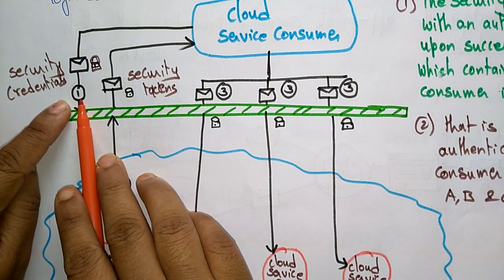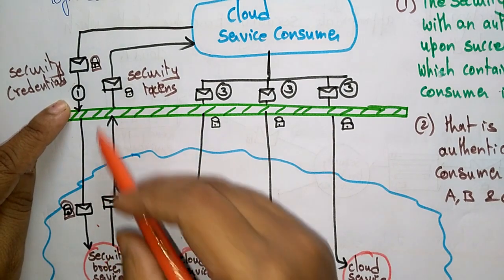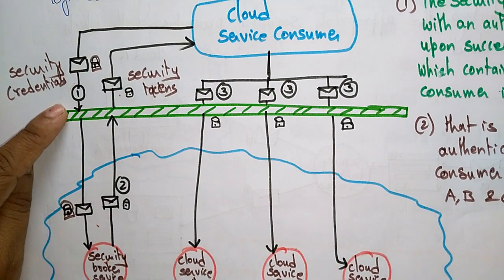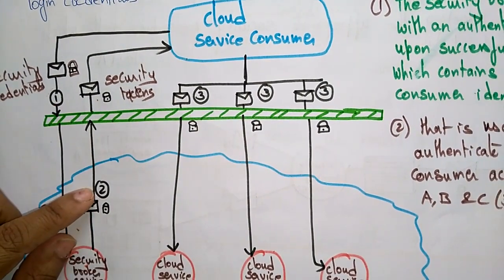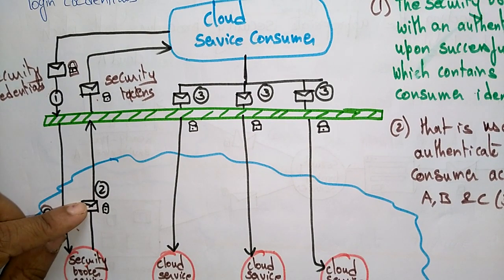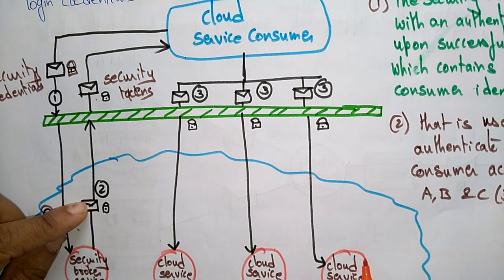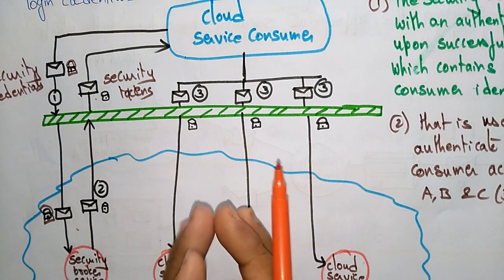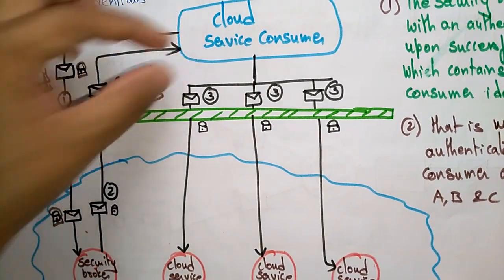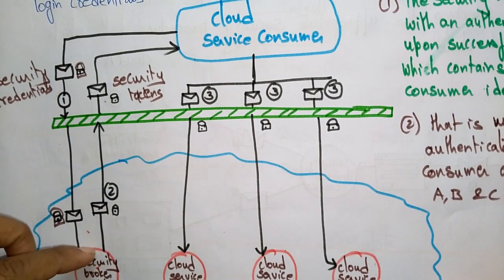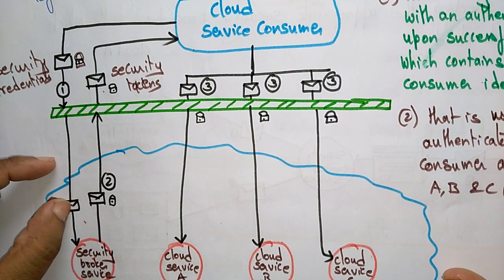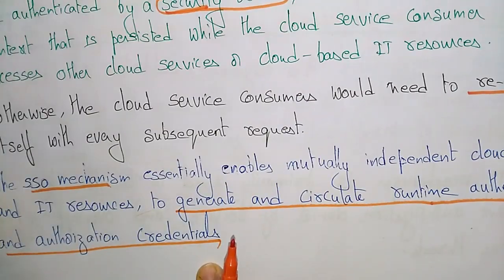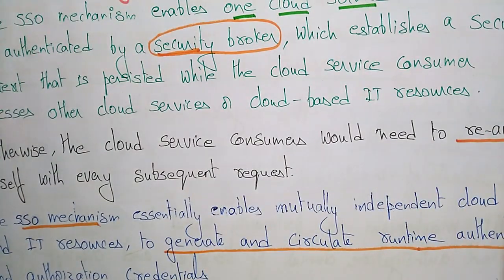The security broker responds with an authentication token upon successful authentication, which contains the cloud service consumer identity information. This is used to automatically authenticate the cloud service consumer across cloud services A, B, and C. Once this person logs in with some credentials using the security broker, next time they can directly access cloud services without re-authentication, because with the help of the SSO mechanism, the runtime credentials are automatically generated and circulated — so there is no need to re-authenticate every time.